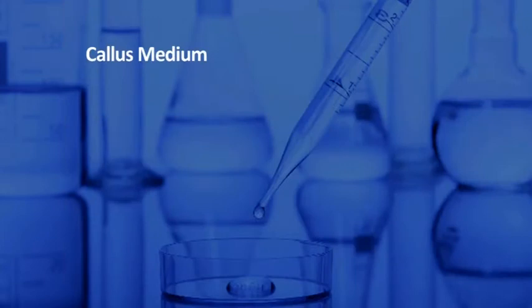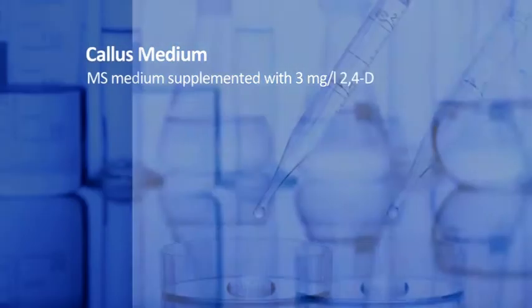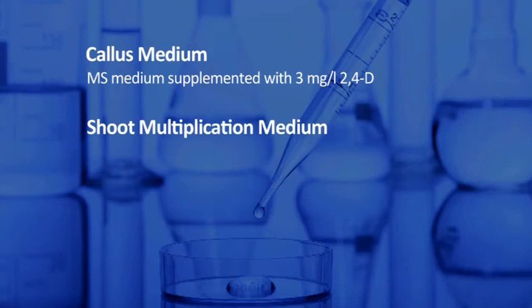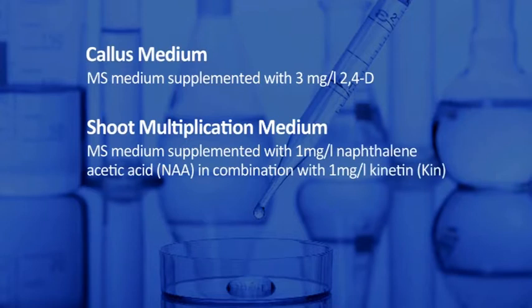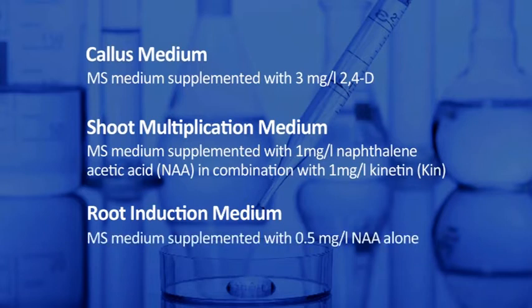Next is the callus medium. For callus induction, we will be using MS medium supplemented with 3 mg per litre 2,4-dichlorophenoxyacetic acid or 2,4-D. Next is the shoot multiplication medium. For this, we will be using MS medium supplemented with 1 mg per litre naphthalene acetic acid or NAA in combination with 1 mg per litre kinetin. Next is the root induction medium. For root induction, we will be using MS medium supplemented with 0.5 mg per litre NAA alone.